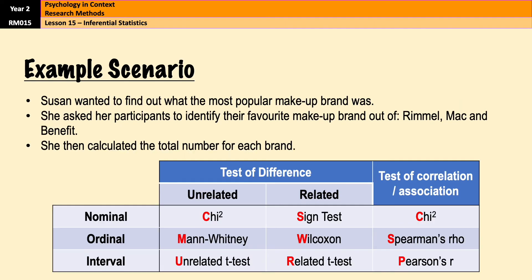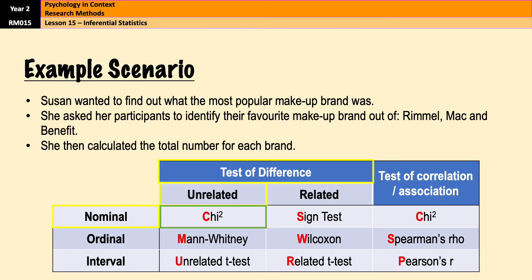Susan wanted to find out what the most popular makeup brand was. She asked participants to identify their favourite out of Rimmel, Mac, and Benefit, then calculated the total number for each brand. That is a test of difference, with an unrelated design. It is nominal data because participants exist in categories, which means they would use a chi-squared test.